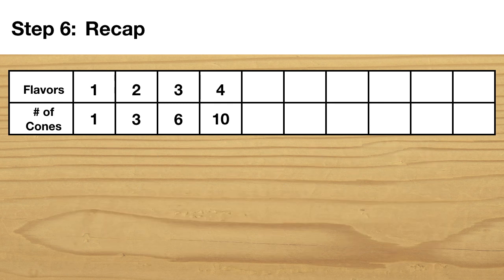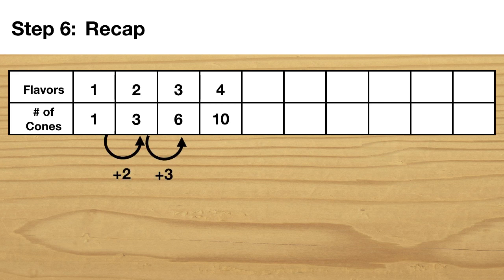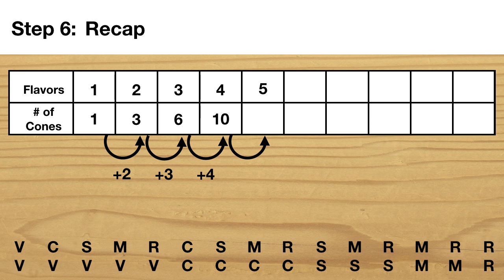I started looking at the numbers in my chart and I noticed something. The number of possible cones increased first plus two, then plus three, then plus four. I wondered to myself, would the next jump be plus five? I decided to test it out. I checked five flavors using the same process to stay organized as before. I found that there are 15 possible cones, which is exactly plus five. Now I felt pretty confident that I'd found a pattern.